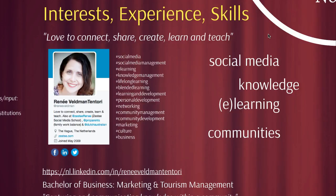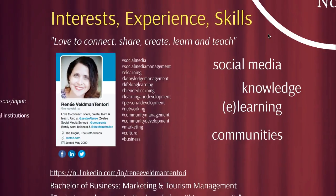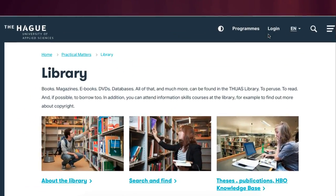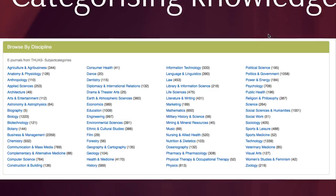There are so many different paths I could follow, so I'm starting big — listing everything — and then focusing in, which is what I'm doing on the right-hand side here. I need to research all existing research areas, do a literature review, look through different journals, then connect that with what I've covered in MICM and my personal interests. I'll be spending a lot of time at the library, both online and in the physical library.